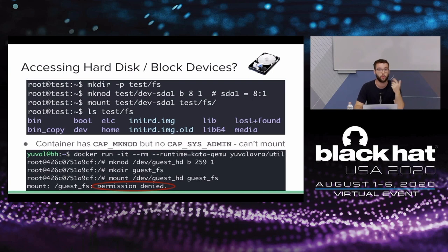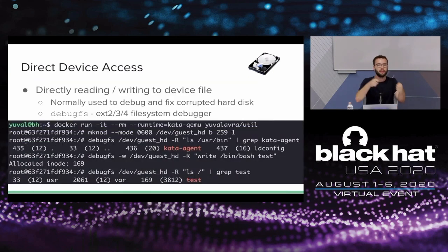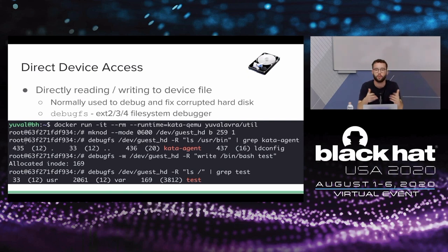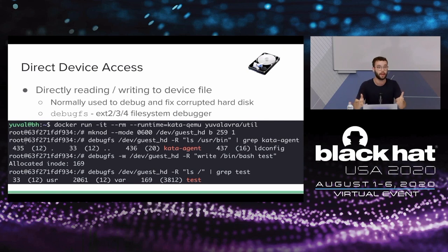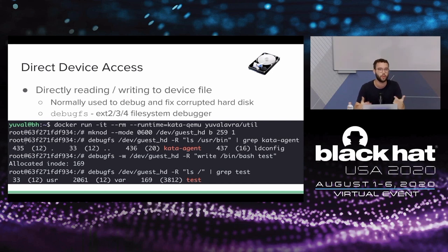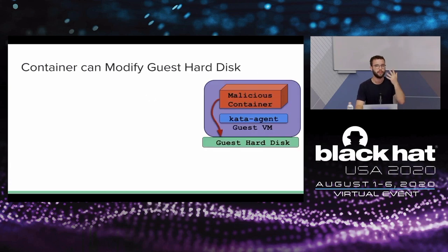There is actually another way to access devices in Linux: directly reading and writing to the device file, without needing to mount it. For example, if the hard disk has a corrupted file system and you can't mount it correctly, you might need direct access to the device to fix things. There are build tools like DebugFS which we can use inside the container to directly interact with the hard disk without needing to mount it. We can see the files on the hard disk — a great indication that it's really the guest hard disk, because we can see the Kata agent binary present on the guest. And it's not only reading access — it's also writing access. Because we don't have the device cgroup, we can actually modify the guest hard disk from within the container.